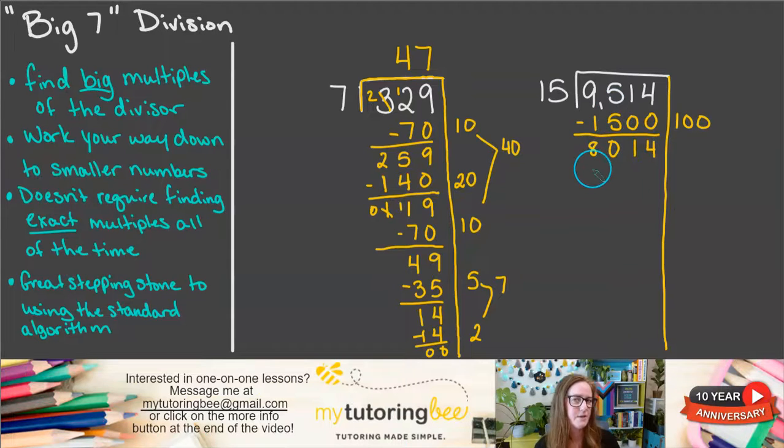So when we subtract this away, we still wind up with kind of a big number, 8,014. So I want to take away a little bit more this time. Let's go with 200 this time. So 2 times 15 is 30, and I've got those two zeros at the end. So we're taking away 3,000.